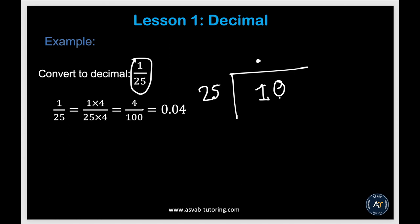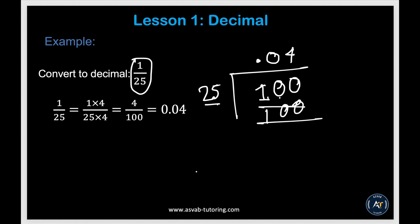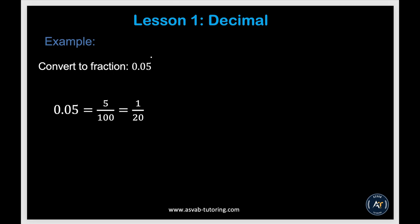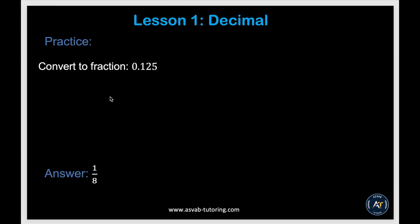To convert from decimal to fraction, take the digits after the decimal point and place them over 1 followed by as many zeros as there are decimal digits. For 0.05, you have 2 decimal digits so the denominator is 100, giving 5 over 100, which simplifies to 1 over 20. Try converting 0.125 by yourself and make sure you get 1 over 8.